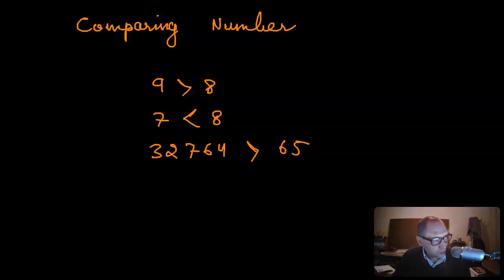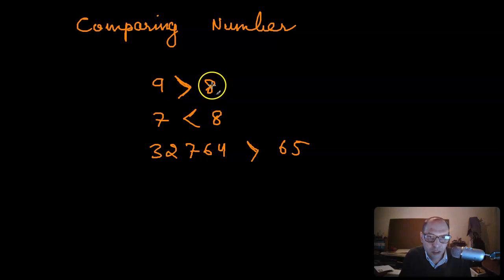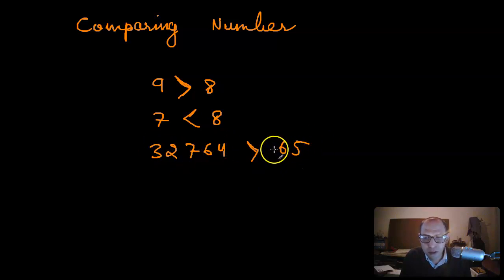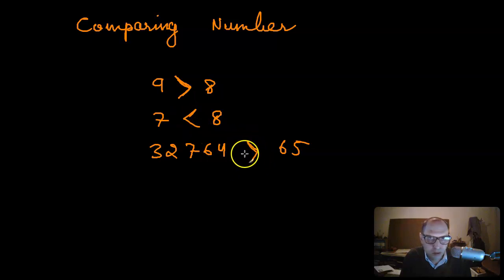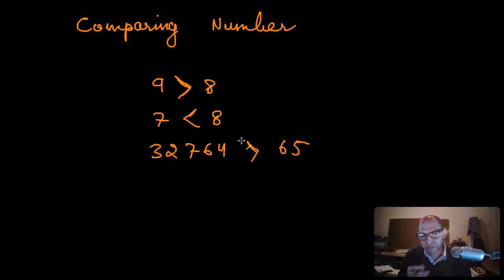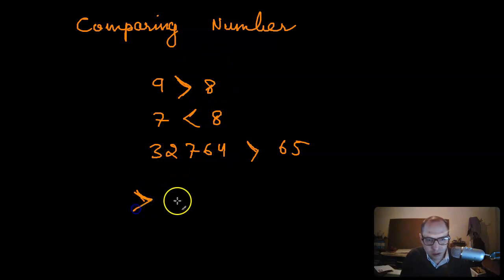When you want to compare numbers, how do you know that nine is greater than eight, or how do you know that this number is greater than this number? You might use the signs very easily without even thinking. But in your mind, you already have some sort of algorithm in order to decide whether in each case you have to use the greater than or less than sign. So the algorithm has to be there.